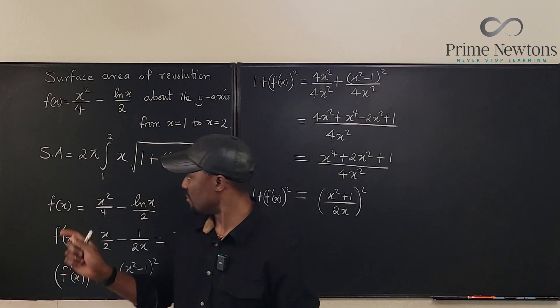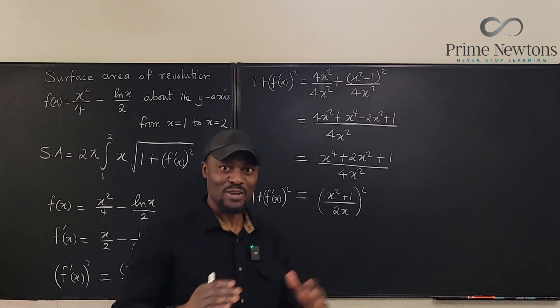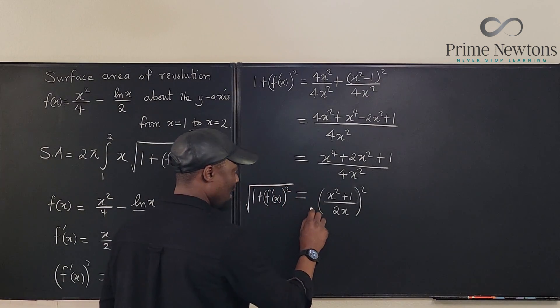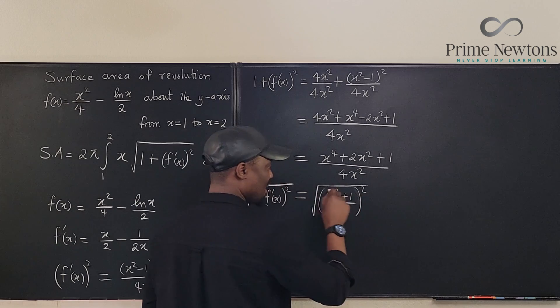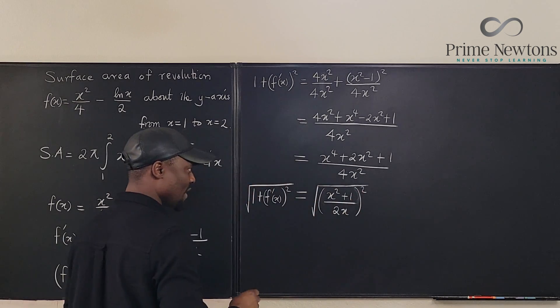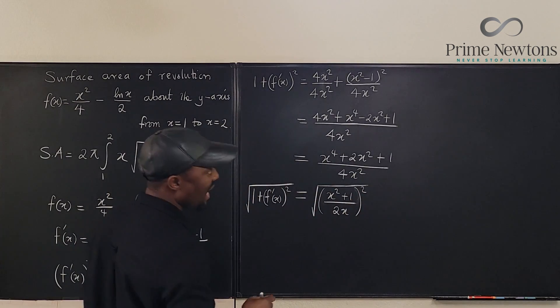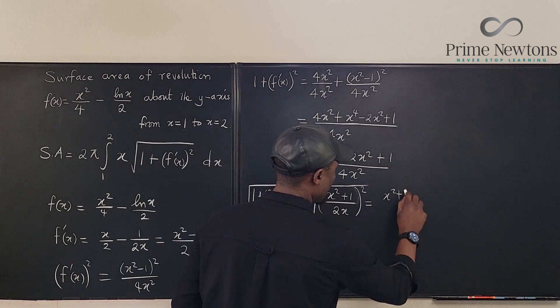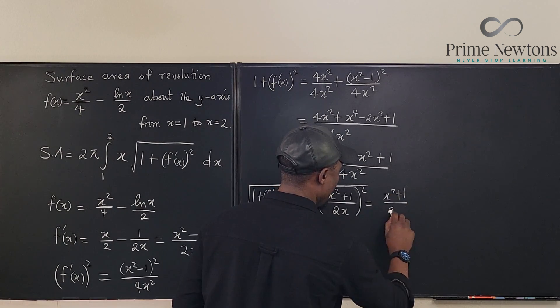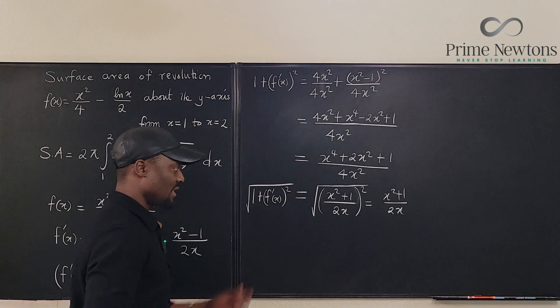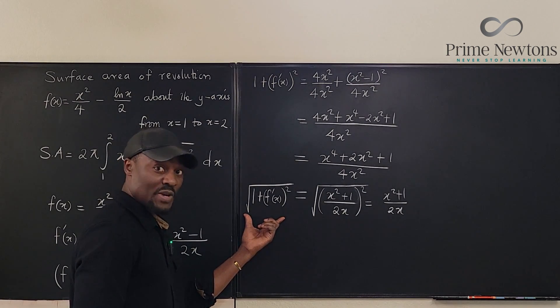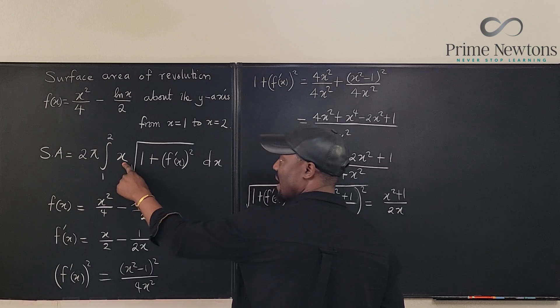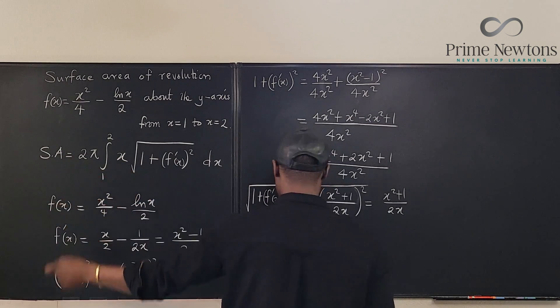So now we need to take the square root. See, we're gradually moving up. So if we take the square root of this, we take the square root of this. And guess what? This cancels this out so that what we have is essentially just x squared plus 1 over 2x. That's what this is. So now we can multiply by x and then take the integral.